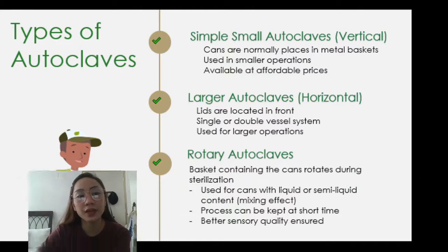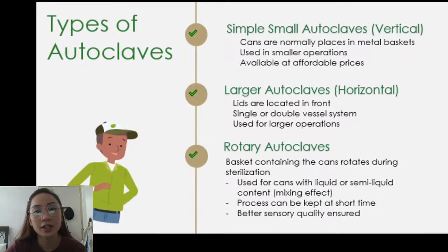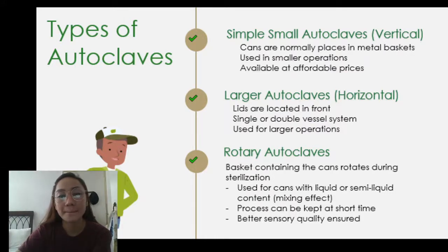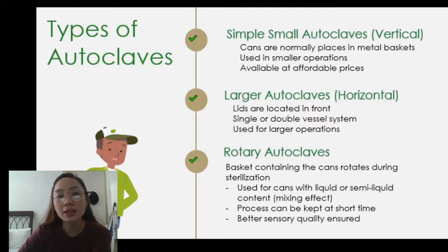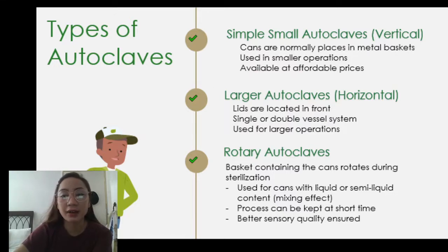There are three main types of autoclaves to identify. First, simple small autoclaves — the vertical type, where cans are normally placed in a metal basket. They are used in smaller operations and are available at an affordable price. Second, larger autoclaves — the horizontal type, whose lids are located in front. It is a single or double vessel system and is used for larger operations.